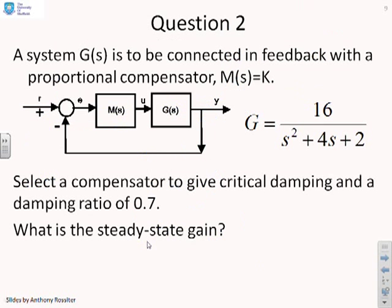Question 2. The system G is to be connected in feedback with a proportional compensator M equals K. And there's your G, 16 over s squared plus 4s plus 2. And the question is, select a compensator to give critical damping, and an alternative compensator to give a damping ratio of 0.7. And what sort of steady state gains do you get? So now is the time to pause as I move to the answer.